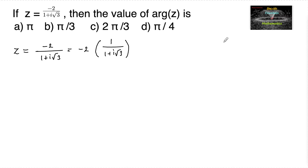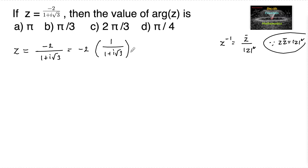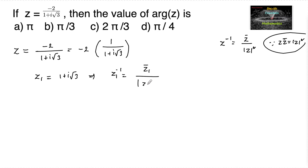Since we know that the multiplicative inverse z inverse is equal to z bar upon mod z square, because z into z bar is equal to mod z square. We can write 1 upon z as z inverse. Let us consider z1 is equal to 1 plus i root 3, so that we can write z inverse is equal to conjugate of z1 upon mod z1 square.